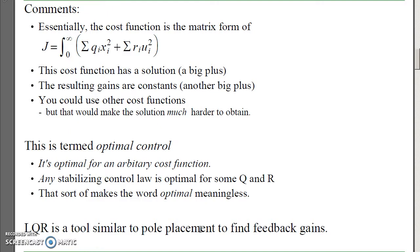Essentially you're playing with some gains. Q is the weighting on each state; R is the weighting on the input. The nice thing about LQR methods is this cost function has a solution, and the feedback gains you get are constants — both big pluses. The cost function is fairly arbitrary though; we use it because it has a solution. If you change the cost function away from being quadratic, the solution is much harder to find. Also, there's a proof that any stabilizing feedback control law is optimal for some Q and R, which rather defeats the meaning of 'optimal.'